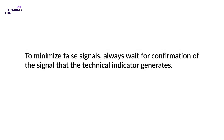To minimize false signals, where the price movement differs from what was expected from the indicator, a technical indicator is often combined with other tests or with other indicators to increase its reliability. This is known as waiting for confirmation of the signal that the technical indicator generates. The additional tests are called filters.